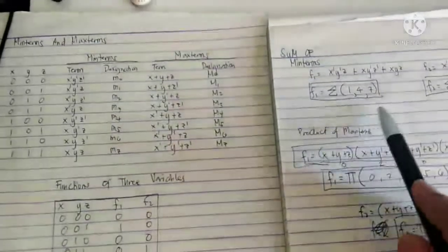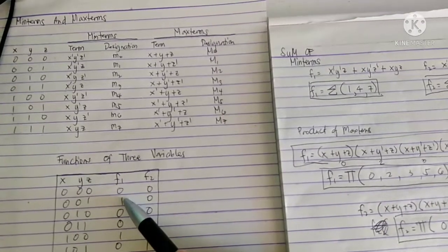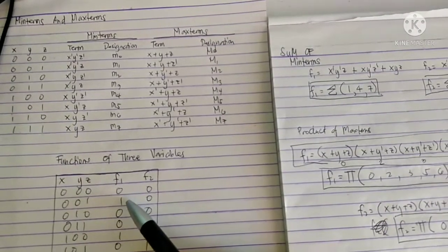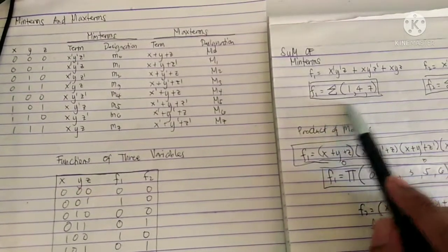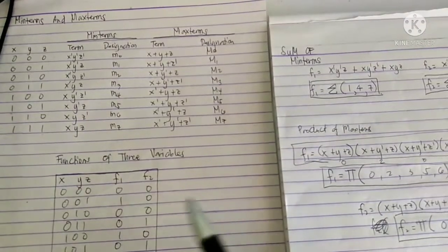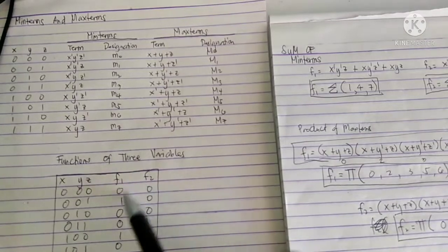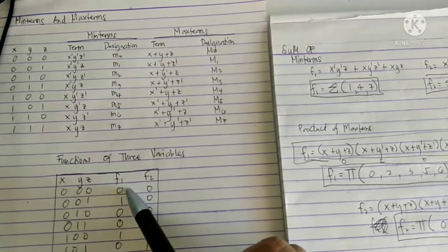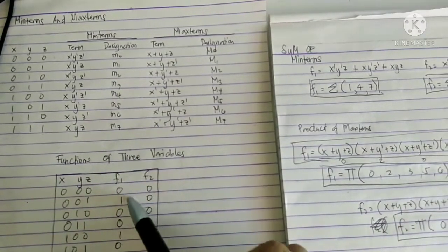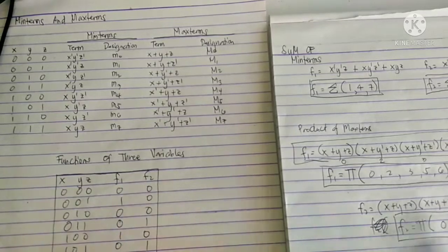In sum of min terms, we look at the outputs of the function which are equal to 1. Likewise, if we take the complement of a min term, the result will be a max term. So in a max term, if you want to take the product of max terms in a function, you should focus on the zeros. In a min term you focus on ones; in a max term, the complement gives zeros.